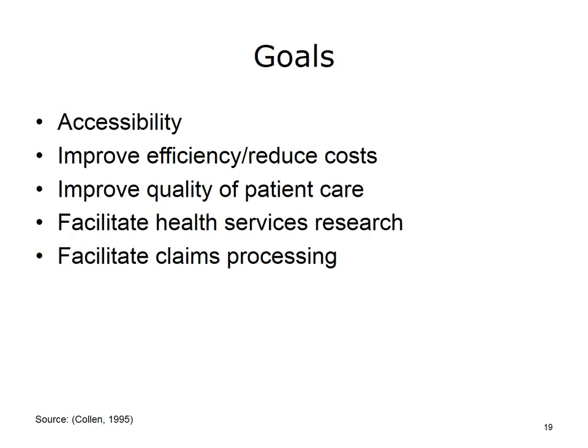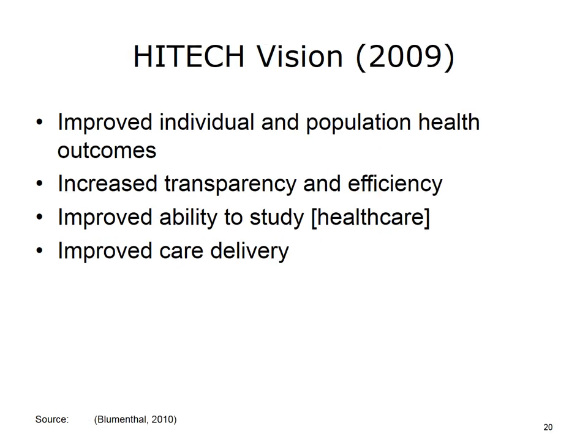As Colin saw it entering the 1990s, there were five main goals an EHR system needed to meet: information needed to be accessible when and where needed; the system should improve efficiency and reduce costs; it should improve the quality of patient care; it should facilitate research on delivery and outcomes of care; and it should facilitate claims processing as well as clinical functions. Looking at the vision behind the HITECH Act of 2009, we again see echoes of those earlier goals.